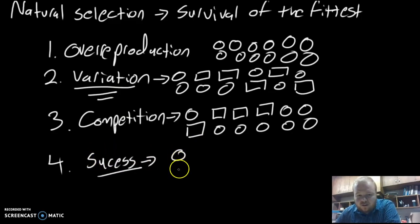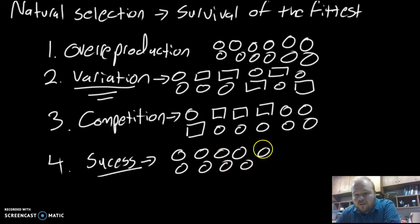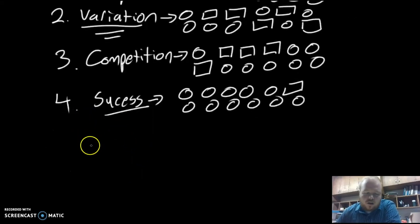Over time, if competition is strong enough, you're going to result in success. Success means organisms that survive the best are going to be more dominant in future generations. The circles are surviving more favorably, and the squares have dwindled, though they aren't fully removed from the population.